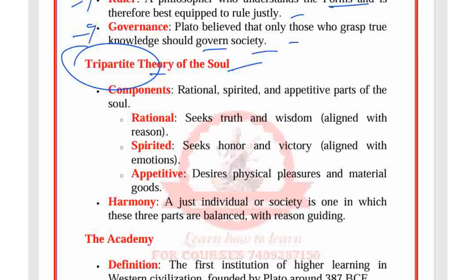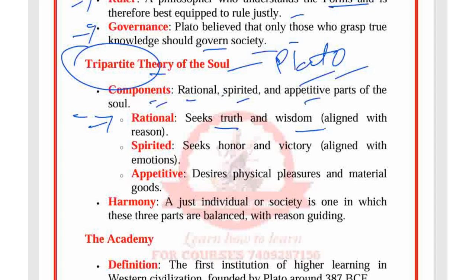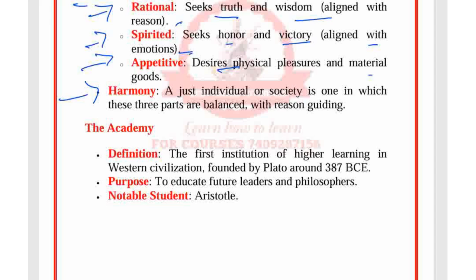Plato's tripartite theory of the soul has three components: the rational part, which seeks truth and wisdom; the spirited part, which seeks honor and victory; and the appetitive part, which desires physical pleasure and material goods. A just individual or society is one in which these three parts are balanced, with reason guiding the others.